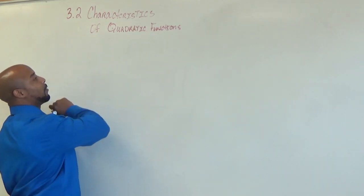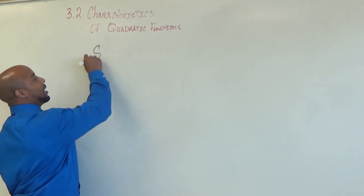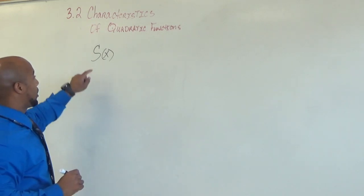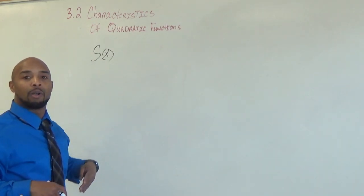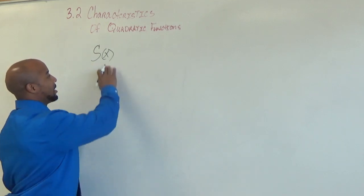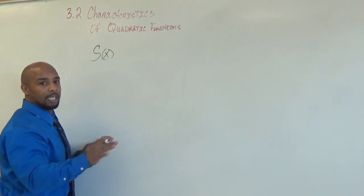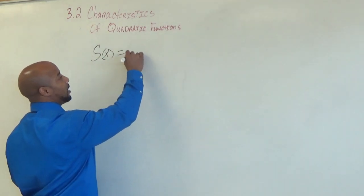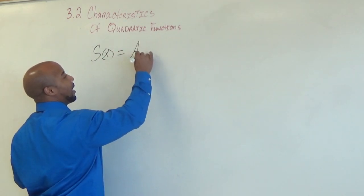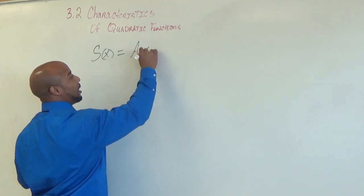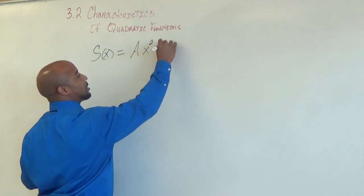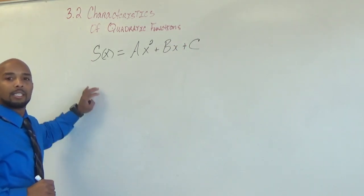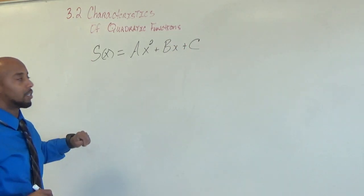The standard form for a quadratic function — I'm going to put S of x. The only reason I'm putting S of x is because the S is just letting it represent the word standard, but the S is simply the name of a function. So the standard form for a quadratic function is A times x squared plus Bx plus C. That's the standard form for a quadratic function.